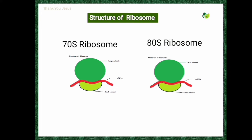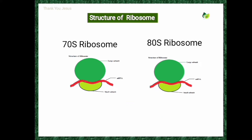70S ribosomes are also found in mitochondria and chloroplasts — these organelles are generally found in eukaryotes but have their own 70S ribosomes. Whereas 80S type of ribosomes are found in eukaryotic cells only.